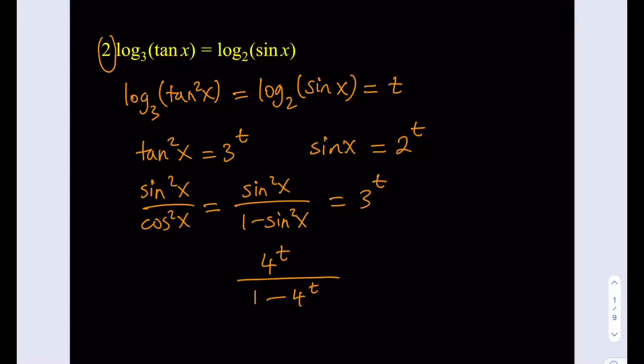So this is what I did because sin x is 2 to the power t. So sin squared x is going to be 2 to the power t squared, which is 4 to the power t. Okay, and this equals 3 to the power t.